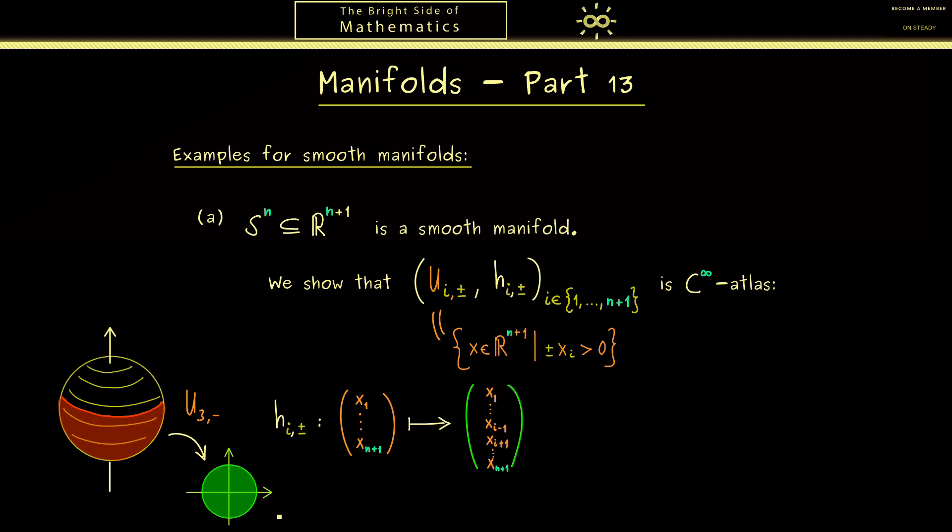More precisely, for our sphere S^2 in the space, this means that the whole hemisphere is mapped to a disk. So this is what we already know.